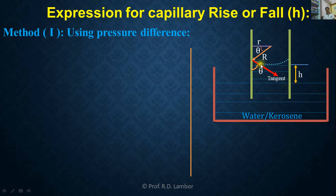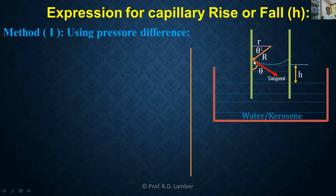In this case, the liquid meniscus has a concave shape. For ordinary water, the liquid meniscus inside the capillary will be concave. The tangent is drawn to the liquid meniscus, and theta is the angle of contact. Small r is the radius of the capillary tube, and theta is the angle of contact.